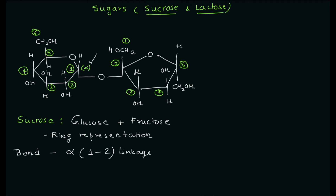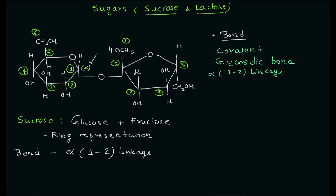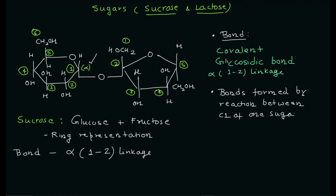We'll discuss whether that bond is ionic or covalent. The convention is to represent this as a C-O-C bonding — that is your glycosidic linkage. It is a covalent glycosidic linkage. This bond is formed by the reaction between the first carbon of one sugar and the OH (hydroxyl) group of the other sugar, giving you the C-O-C linkage, which is the glycosidic linkage.